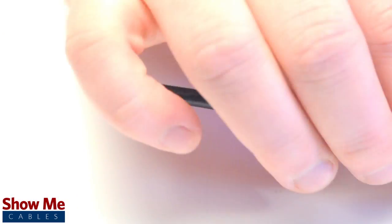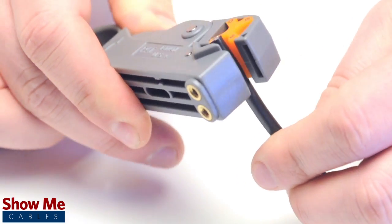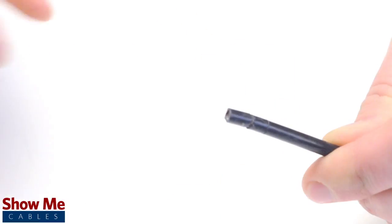Start by inserting the ferrule over the outer jacket of the cable. Then using your cable stripper, strip back the outer jacket and dielectric.